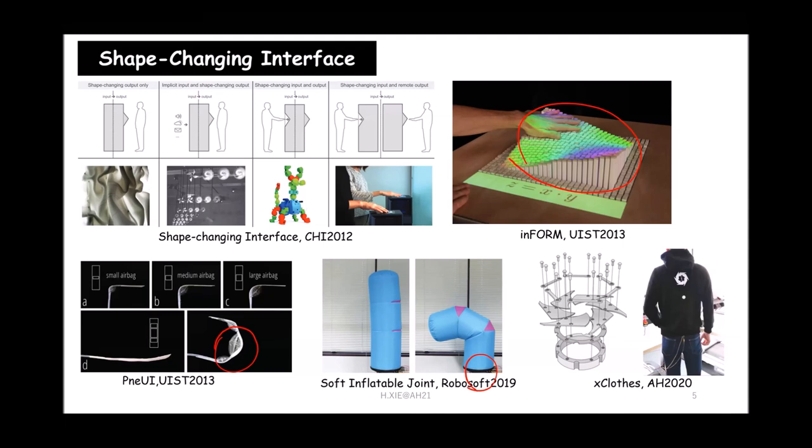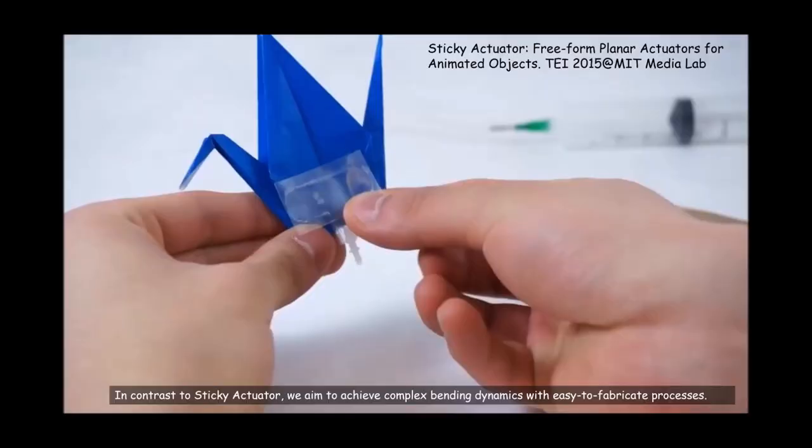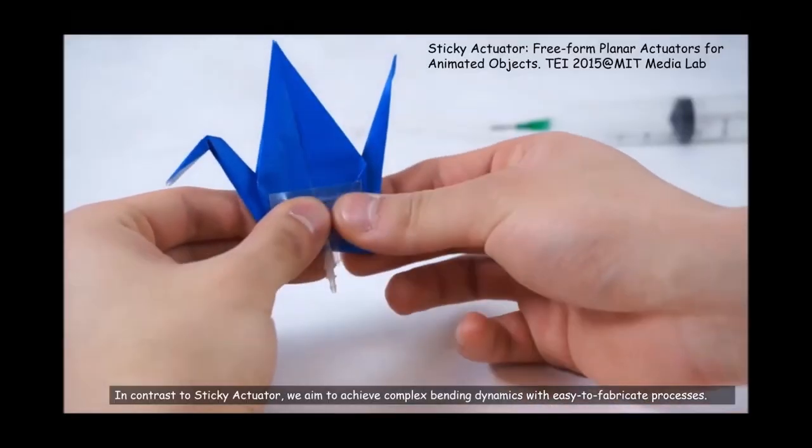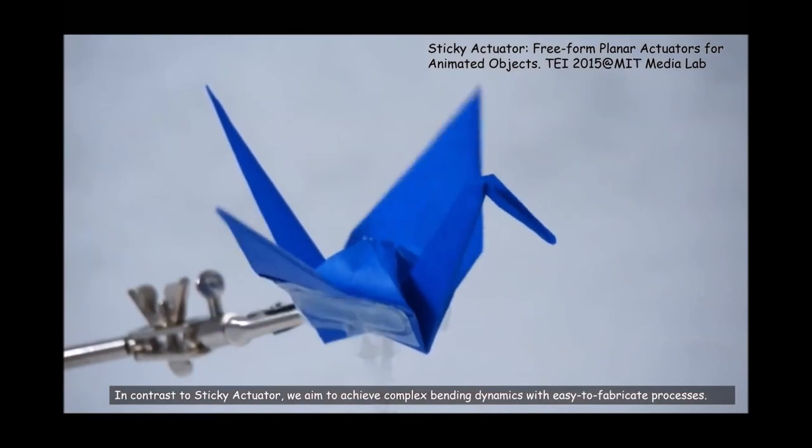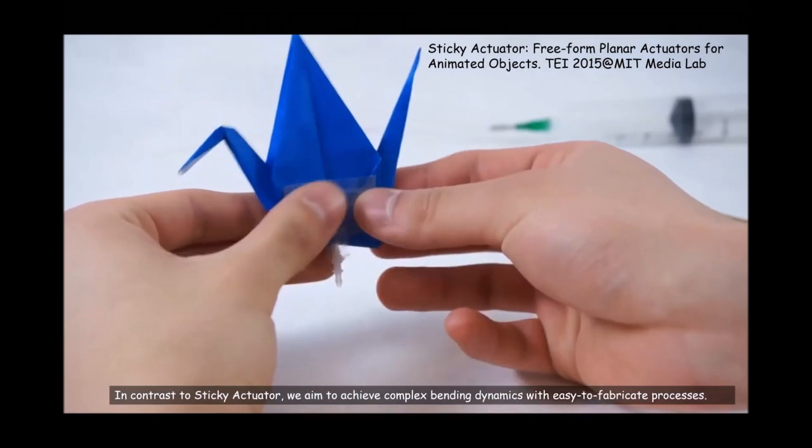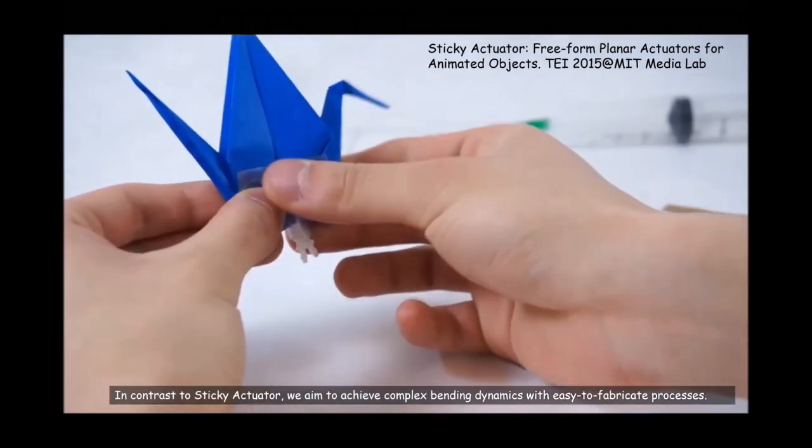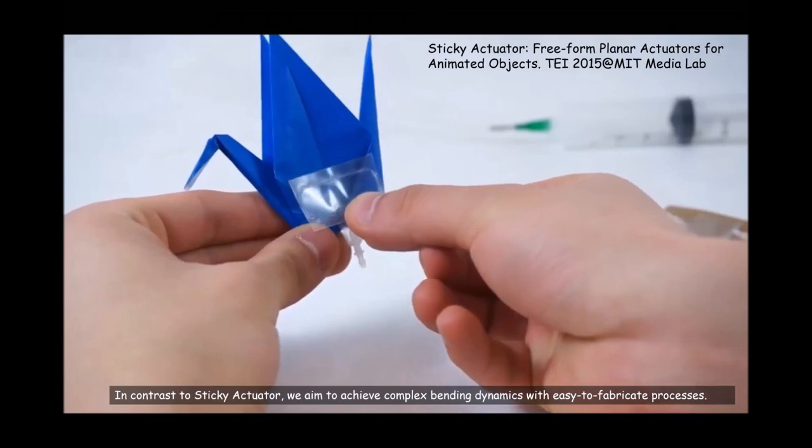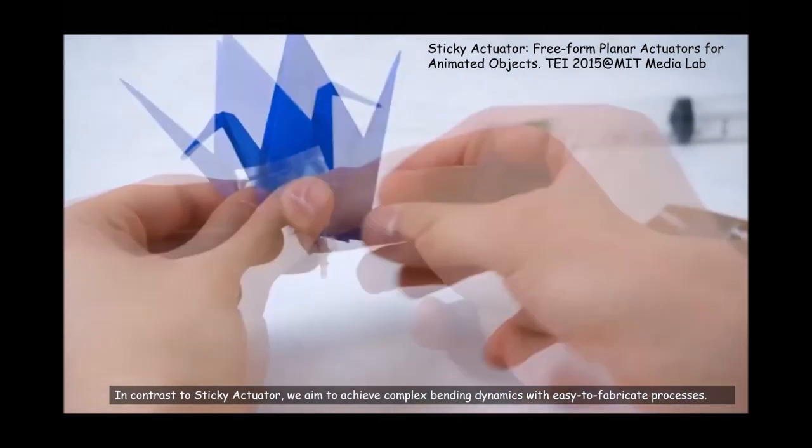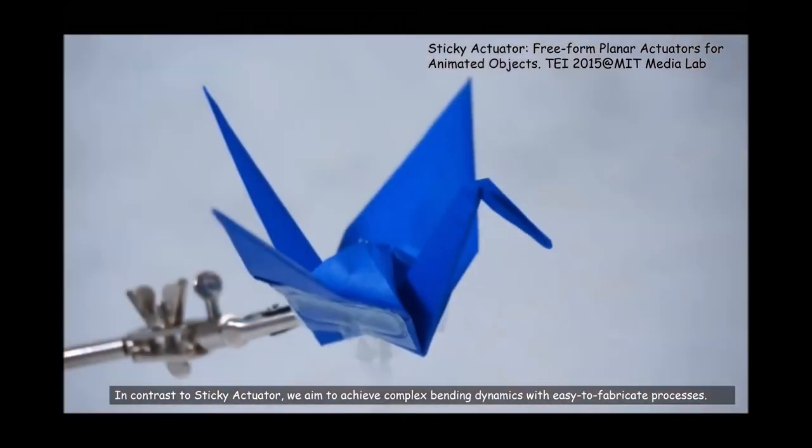This is also our previous work. We designed clothes that can change by itself. We have a hole here so that you can close the hole automatically. It depends on the temperature, whether you feel hot or not. So basically we got inspired from this idea. This is called the sticker actuator. This actuator can attach to some simple objects like this origami crane. When we put it on it, the crane can fly.